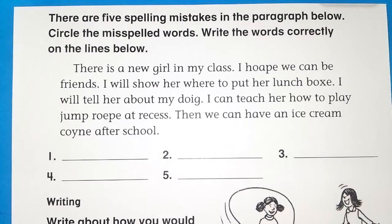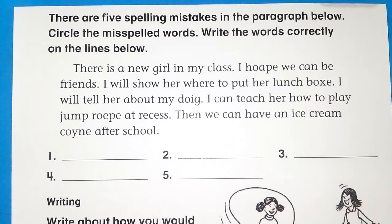There are five spelling mistakes in the paragraph below. Circle the misspelled words and write the words correctly on the lines below. There are five mistakes. Let's read it together.